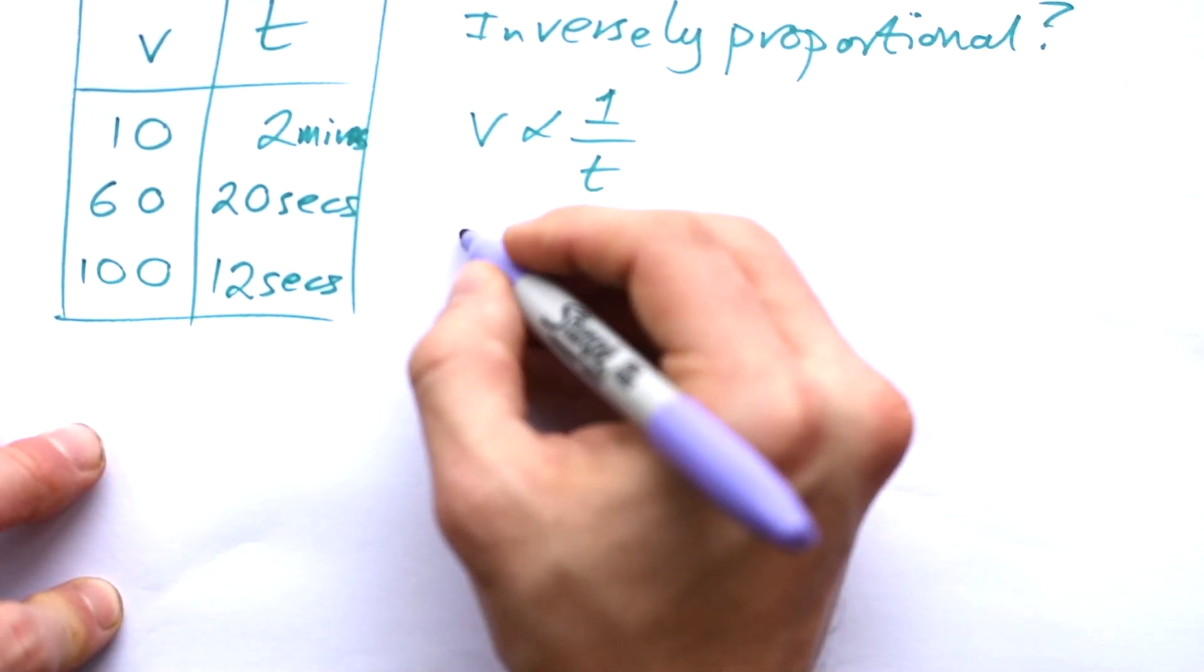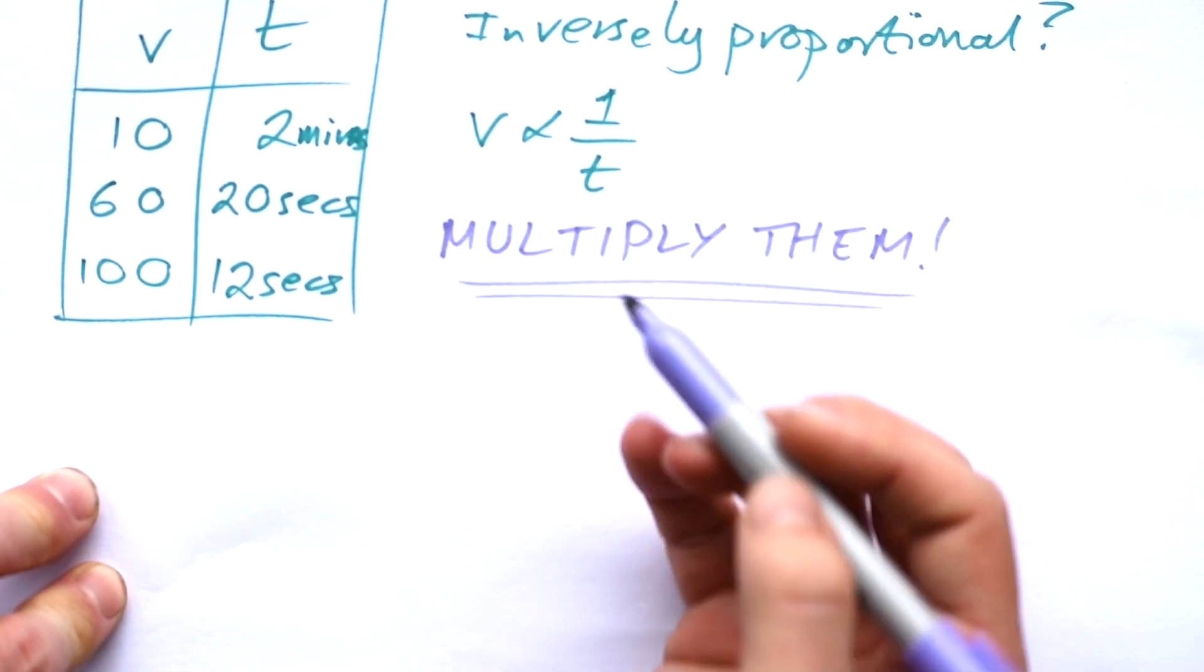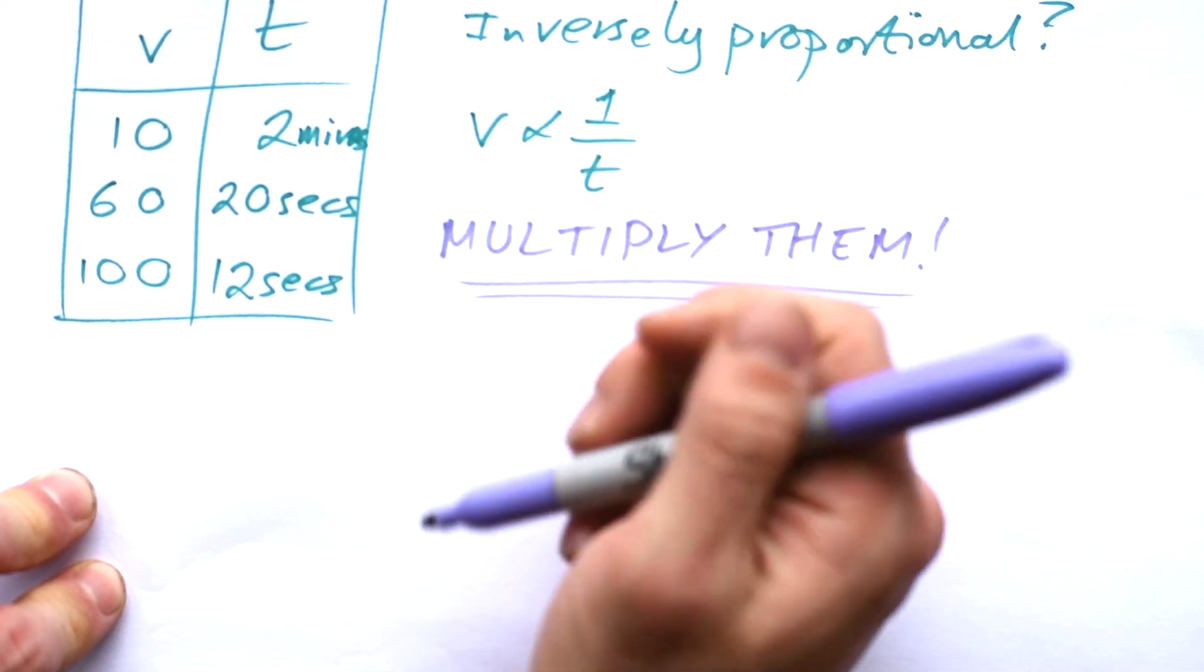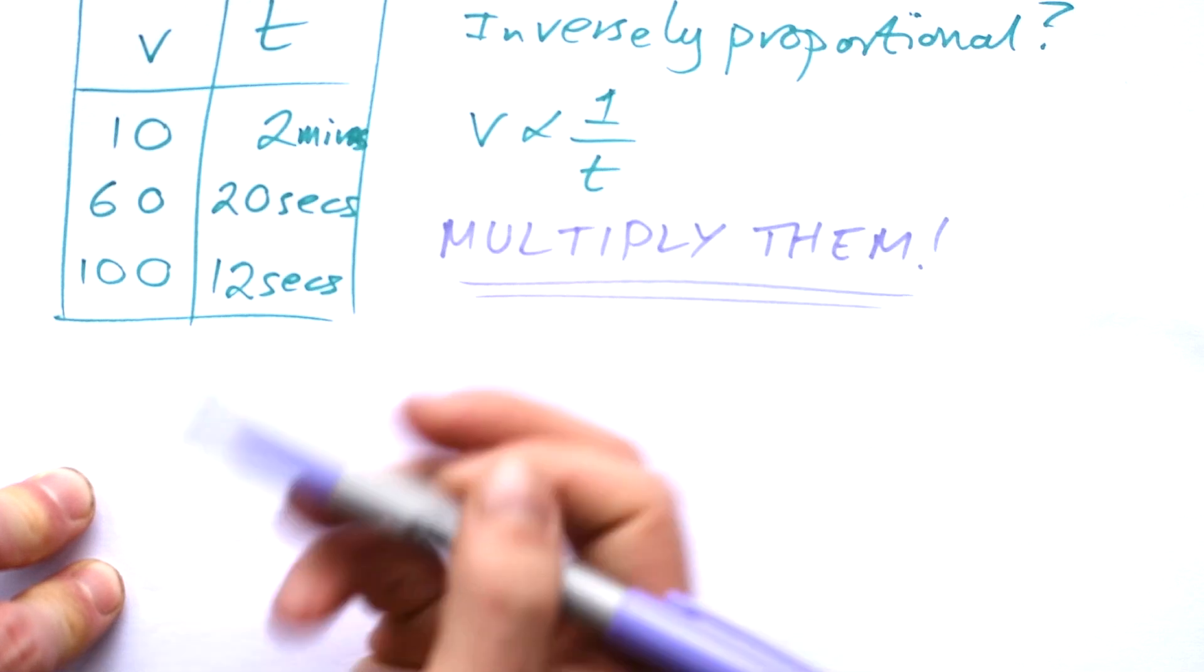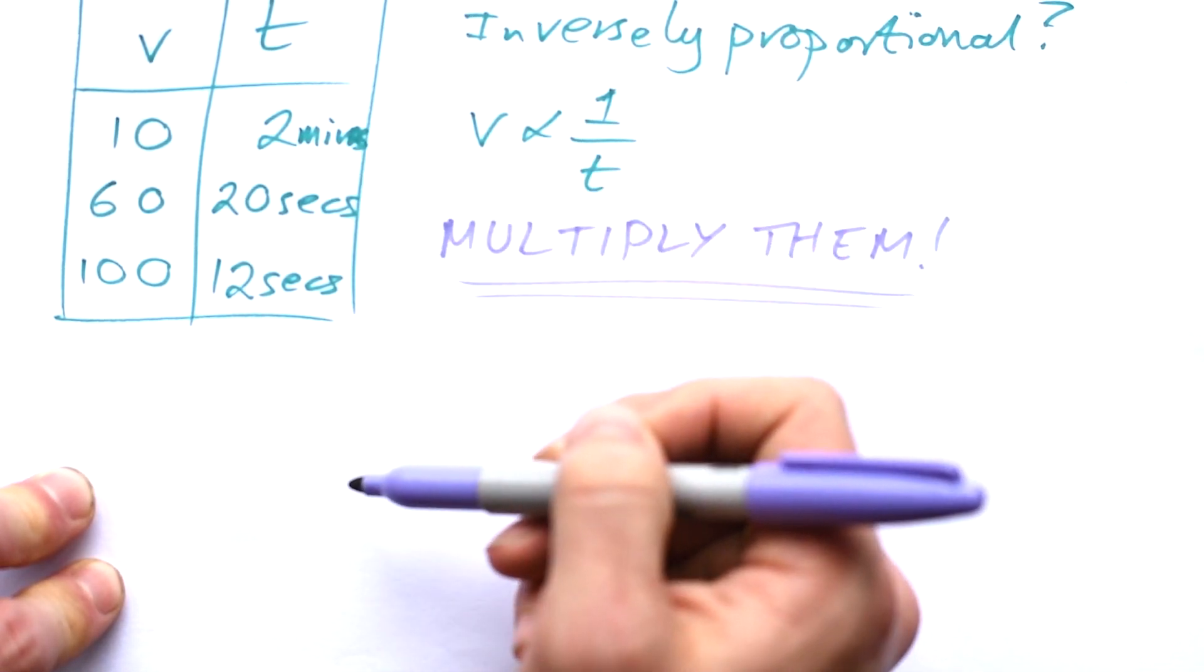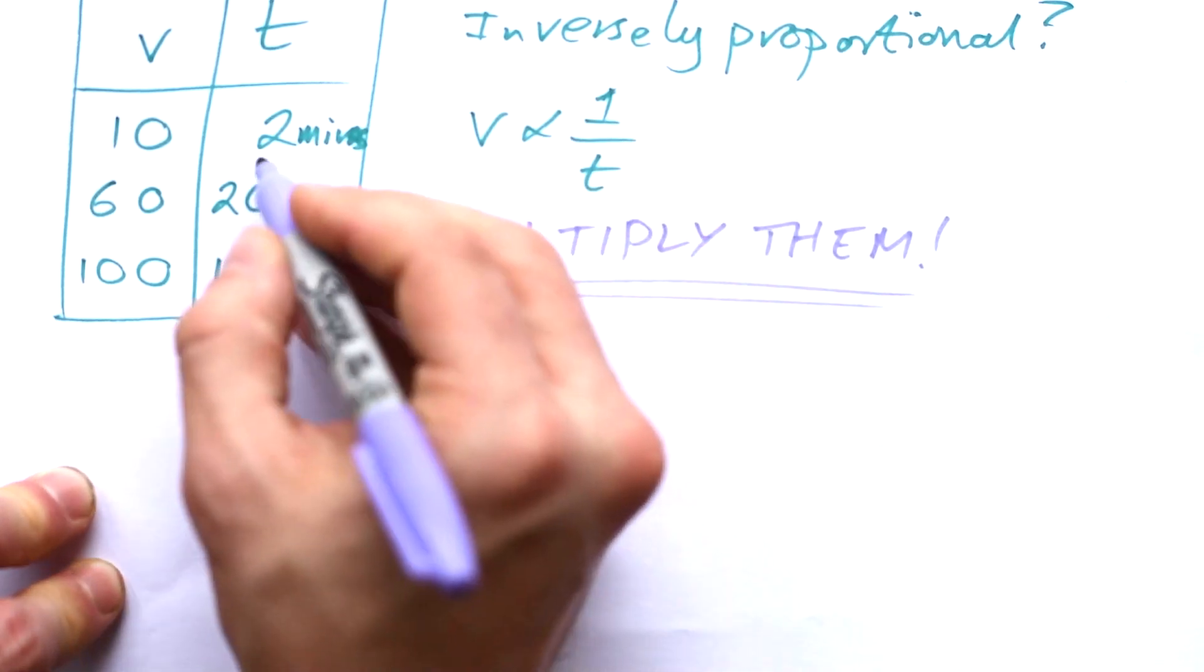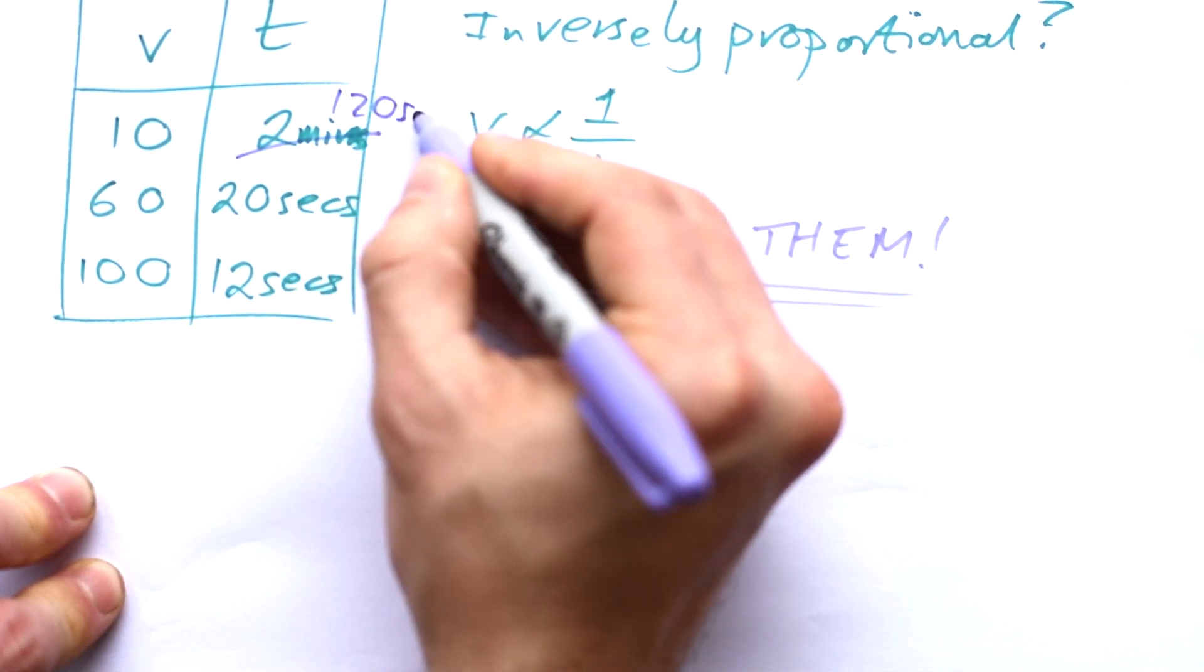Instead of dividing them, we're going to multiply them or times them. But look at this. I've thrown a spanner in the works here by giving 2 minutes, then 20 seconds, then 12 seconds. I can't do 10 times 2, 60 times 20. Remember I said earlier, it doesn't matter what the unit is. Well, they do need to be all the same unit. So it doesn't matter whether it's minutes or seconds, so long as they're all the same. So first thing I need to do is change this into seconds. So that's going to be 120 seconds.